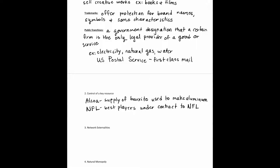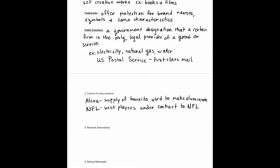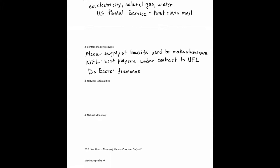Similarly, the NCAA controls collegiate athletes as a resource — it's really the number one organization athletes want to be a part of. One of the most famous monopoly examples based on control of a raw material is the De Beers diamond monopoly. They tried to control as much of the diamond supply as possible to keep prices high, but a couple of decades ago new competitors eroded their control and reduced their monopoly power.